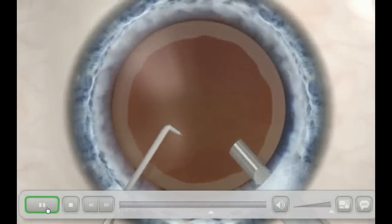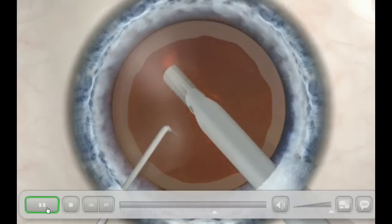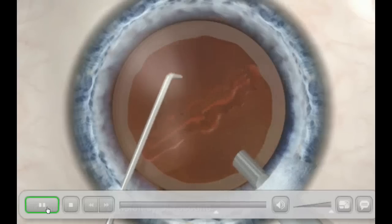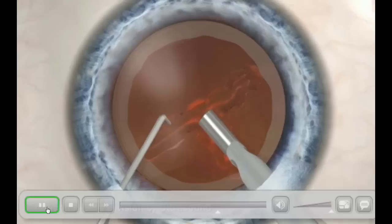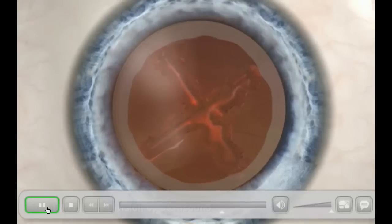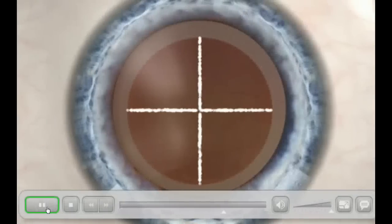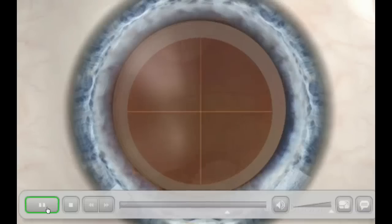Once the outer capsular tissue is opened, the lens must be split into manageable size pieces for removal. Traditional phaco emulsification uses ultrasonic energy to divide the natural lens into quadrants. This step is now performed in an instant and with much less energy with the femtosecond laser.